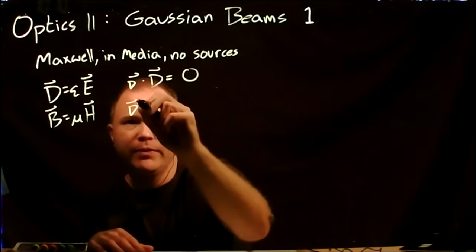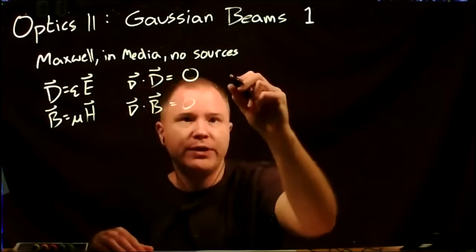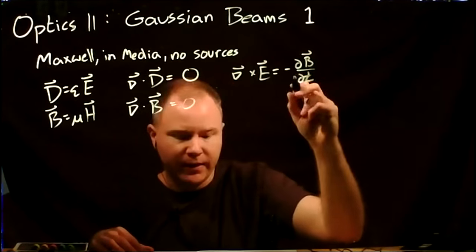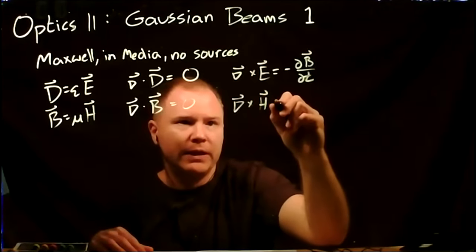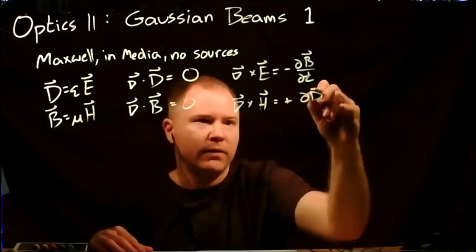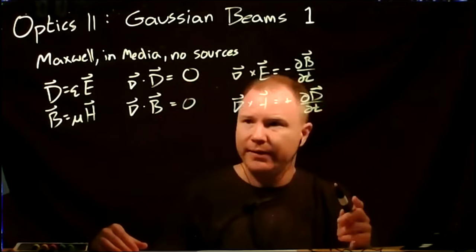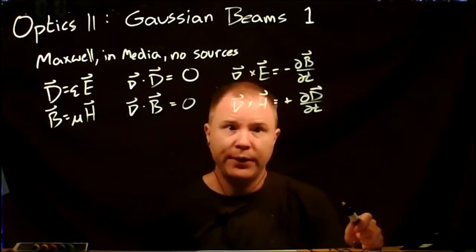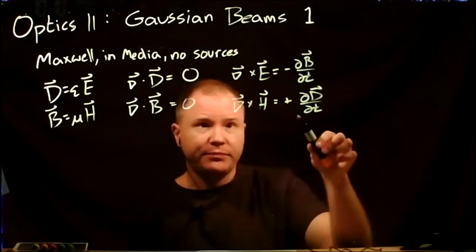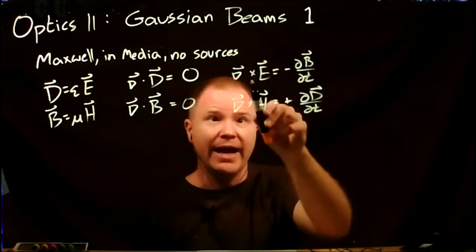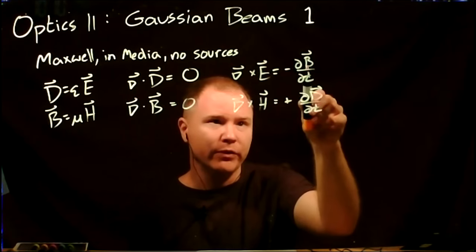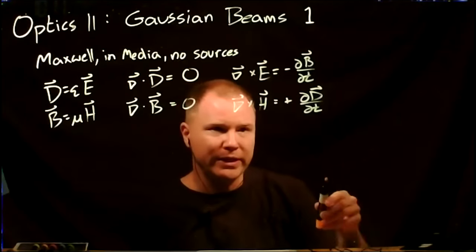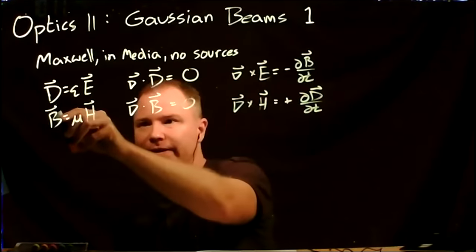Maxwell's equations: we define D = ε·E and B = μ·H, where ε = ε₀ times an order-one factor for the media (essentially 1 for air/vacuum), and μ = μ₀ times an order-one factor. The equations are: divergence of D equals zero (no free charges), divergence of B equals zero (no magnetic monopoles), curl of E is Faraday's law: −∂B/∂t, and curl of H is Ampere's law: +∂D/∂t.